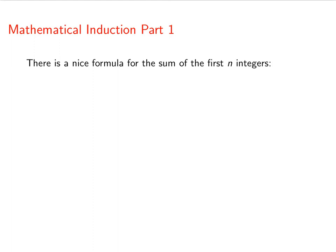Hello, discrete math fans. There's a really nice formula for the sum of the first n integers. If you want to add 1 plus 2 plus 3 all the way up to n, the formula tells you that this is going to equal n times n plus 1 over 2.